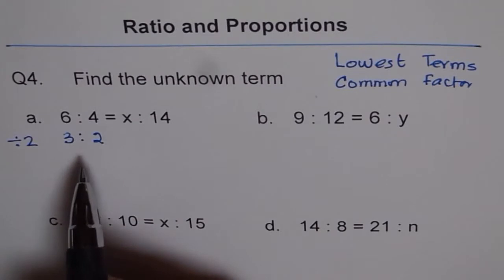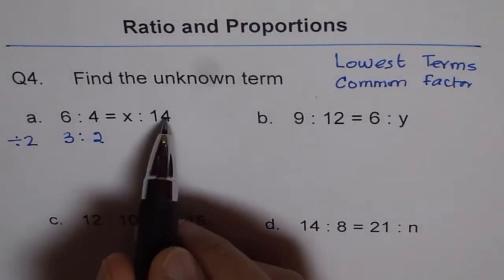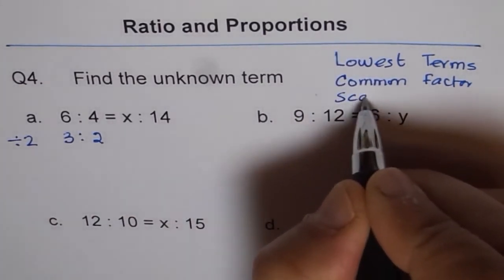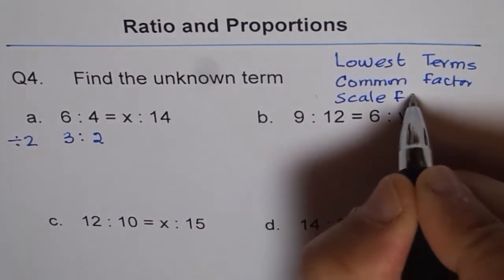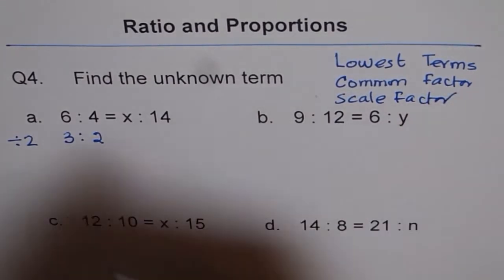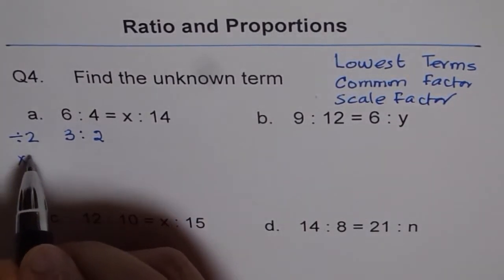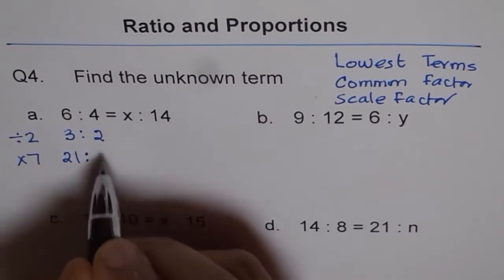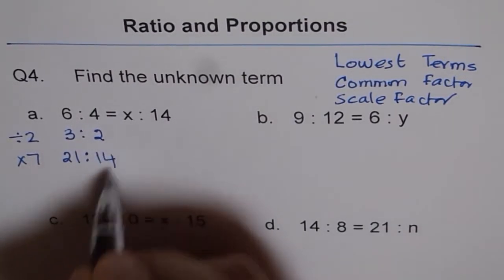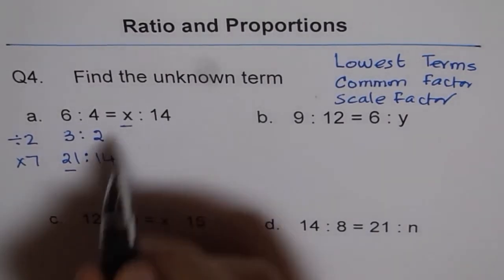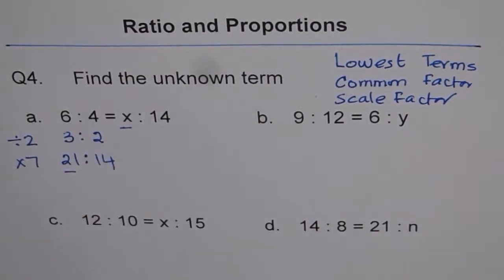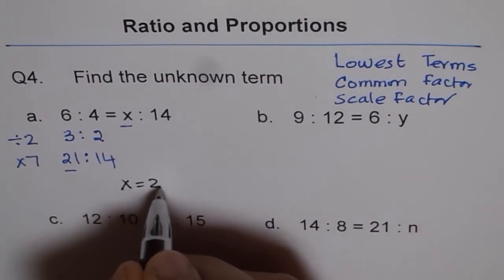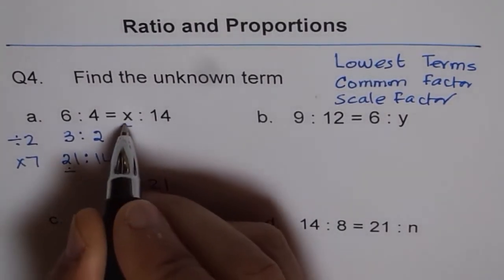Now from here you get 14 by a scale factor of 7. So if I multiply by 7, then I get 21. 7 times 3 is 21, and 7 times 2 is 14. Now when you compare, you can find out what x is. So you say x is equal to 21. That is the value of x.